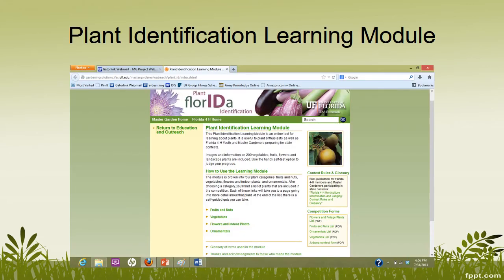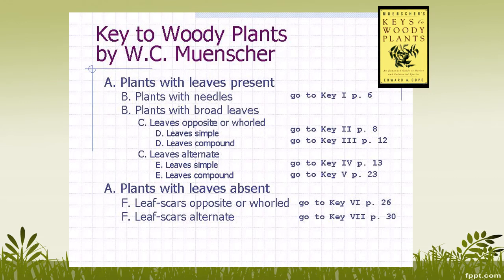There's also a plant identification learning module online — if you go to the state of Florida's Master Gardener website it should be located on there. This is a module similar to the modules in your e-learning on Canvas that will probably be very helpful to reinforce some of this information we've gone over. An identification key basically asks you questions — the first question might be whether the plant has needles or broad leaves, then whether the leaves are opposite or whorled, simple or compound — and depending on your answer it tells you exactly where to go, asks you more questions, and ideally at the very end it will narrow things down and give you the name of the plant you're trying to identify.